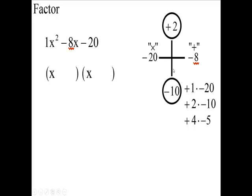Now, notice, when you multiply 2 times negative 10, you get negative 20. When you add 2 plus a negative 10, you get negative 8. So, these are our two answers here. Now, the 2 goes right here, and the negative 10 goes over here. So, that's my answer. My answer is going to be x minus 10 times x plus 2.